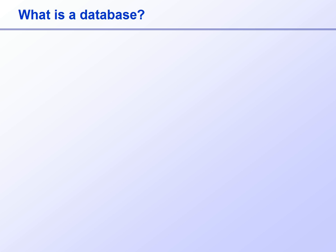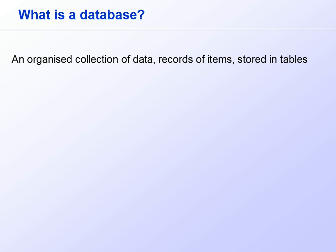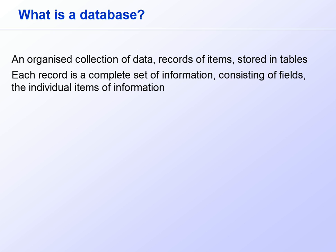A database is an organized collection of data — records of items — stored in one or more tables. Each record is a complete set of information, and each one is made up of individual items of information called fields.